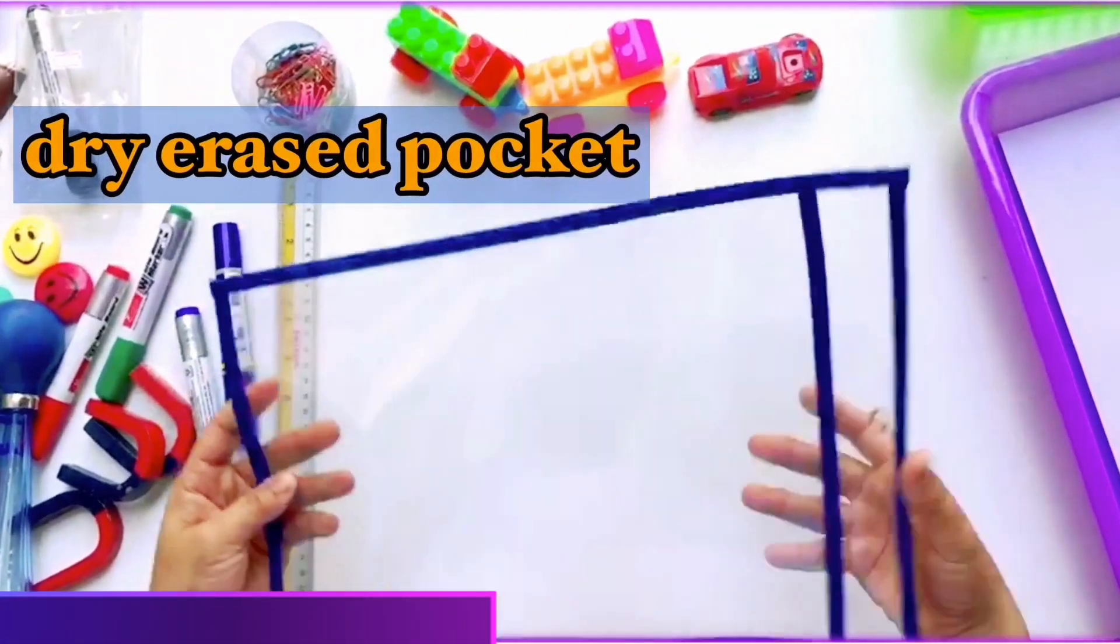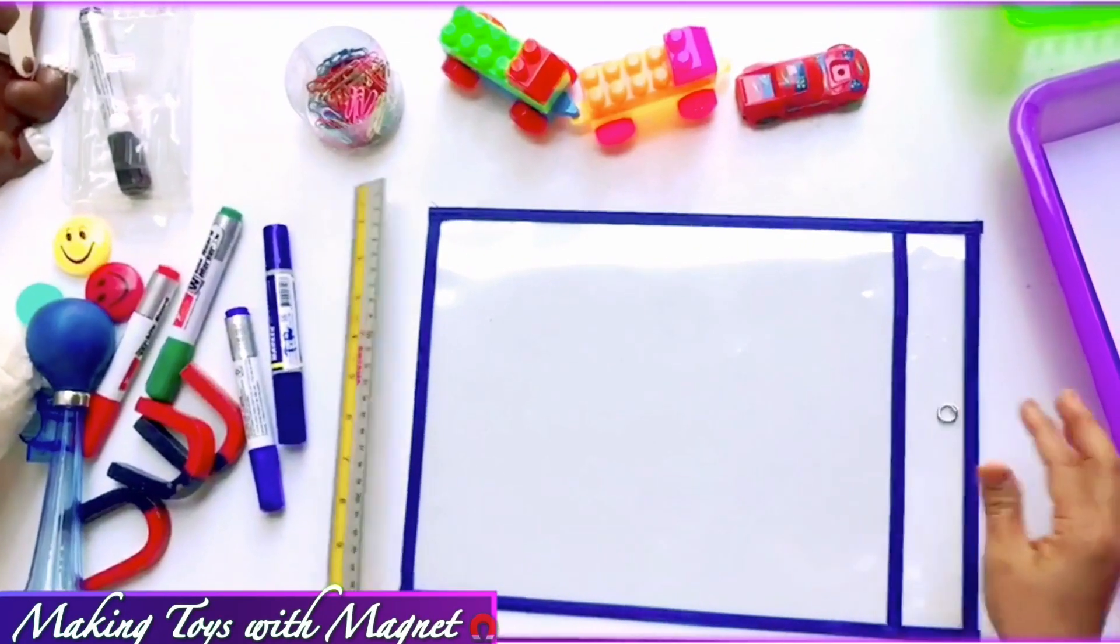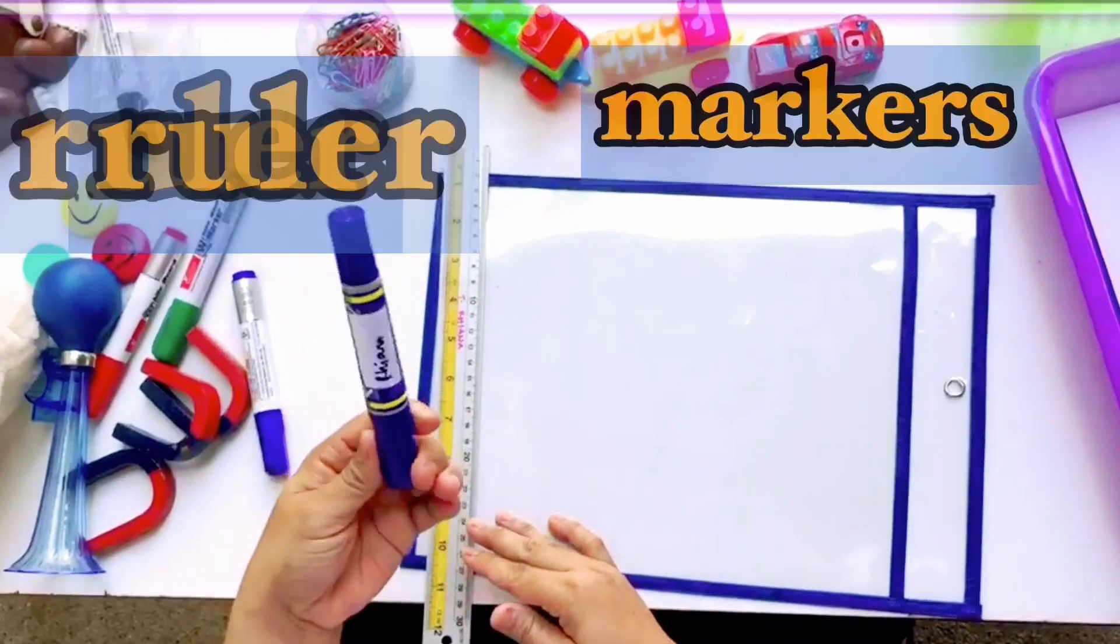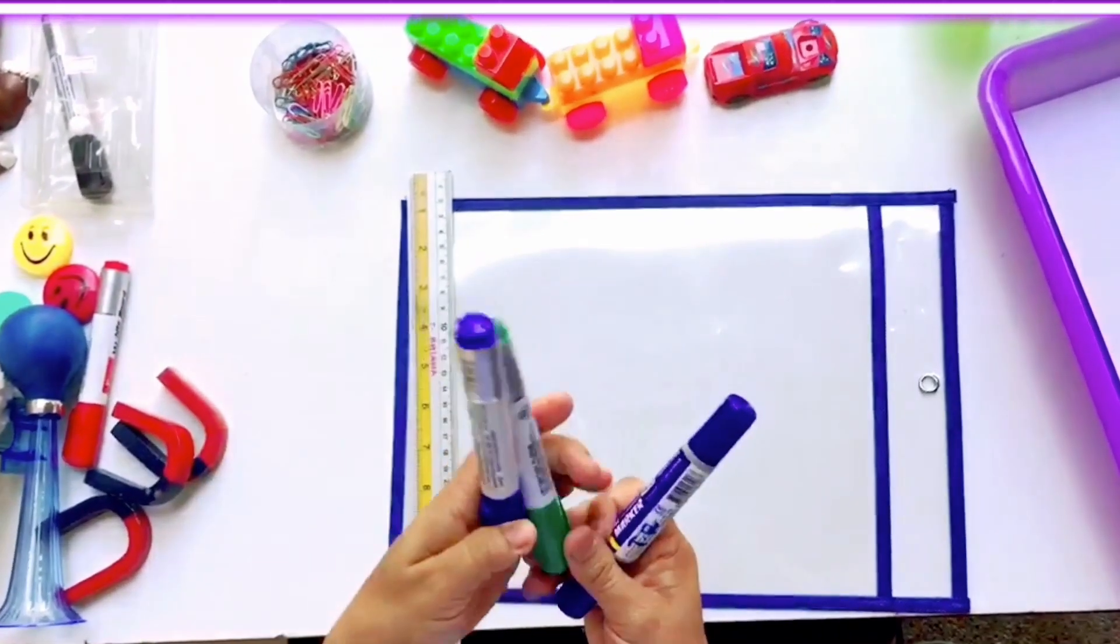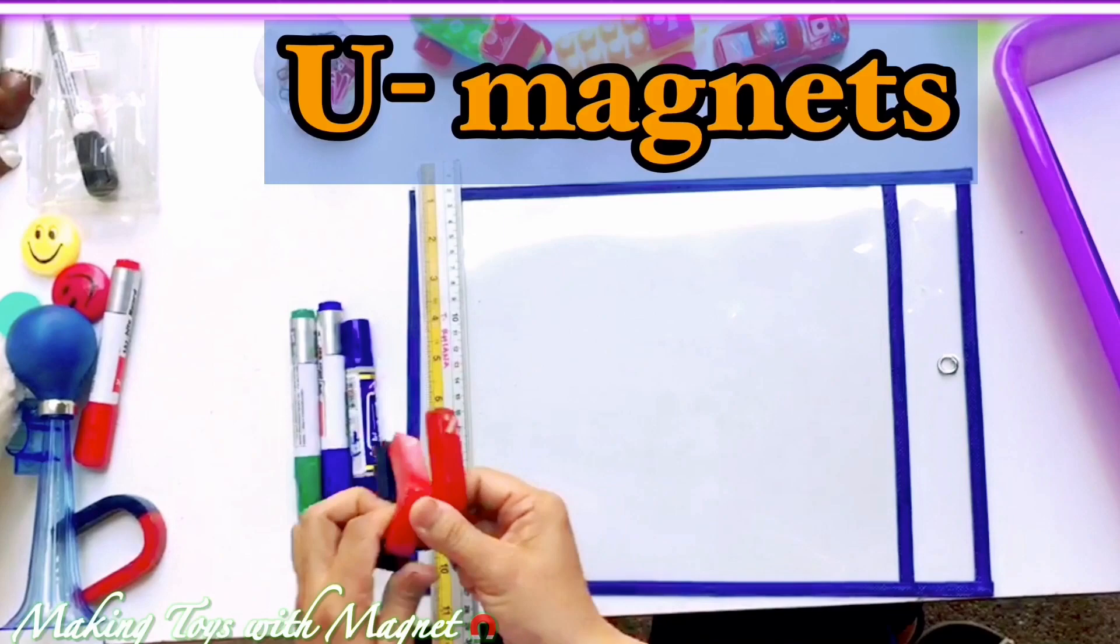So now we have a dry erase pocket. You can buy this online. And then we have a ruler. We have a marker here, permanent markers. This one here we have a whiteboard marker. And we have a new magnet.